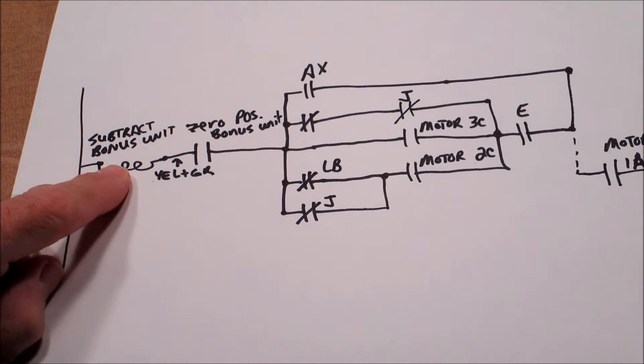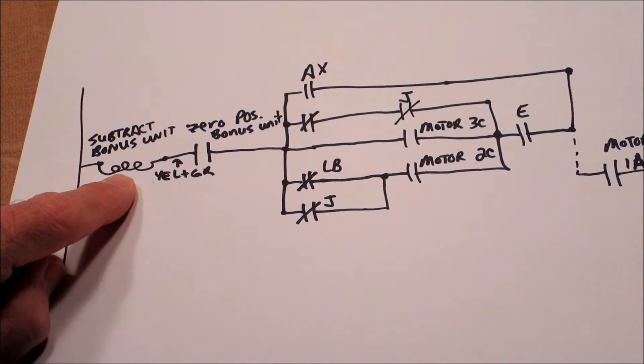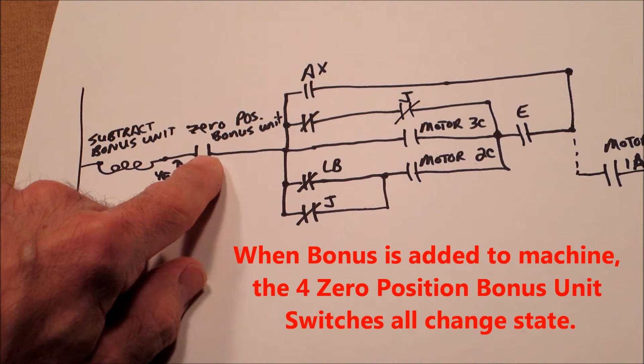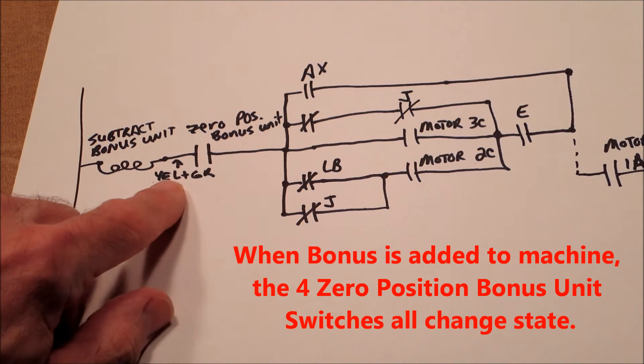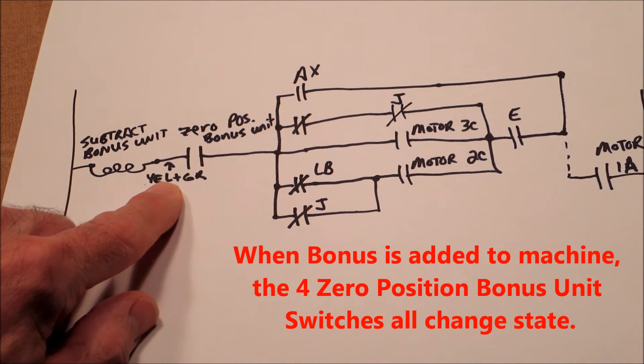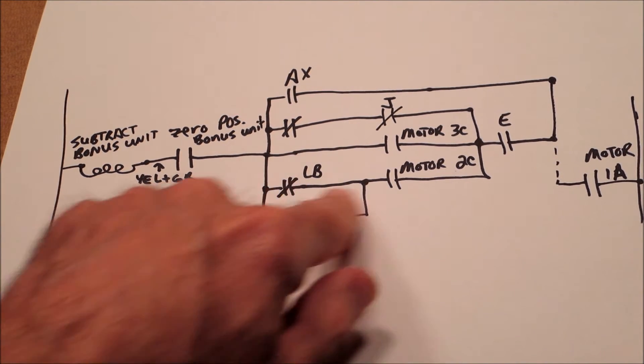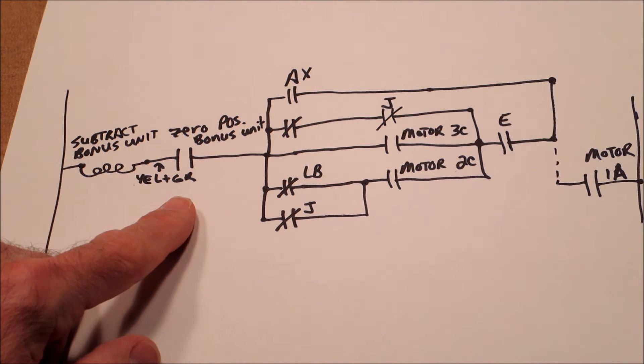After the very first increment, there are a lot of places where a zero position bonus unit comes into play. This is called the subtract bonus unit relay. The first time that bonus is added to the machine, it closes this switch here, the zero position bonus unit with the yellow and green wire. So what that's doing is enabling the rest of this circuit to happen.